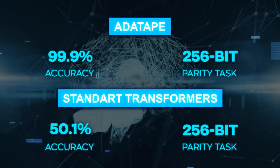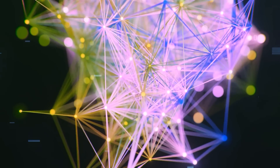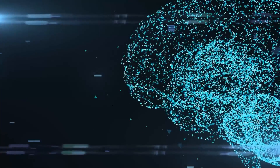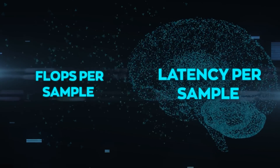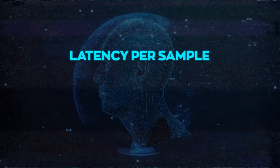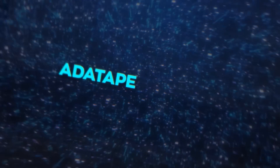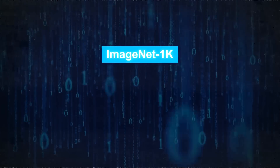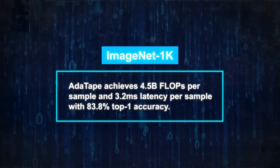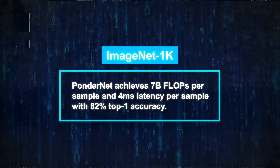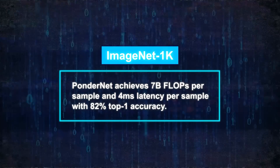AdaTape provides an effective knob to increase accuracy when needed, but is also much more efficient compared to other adaptive baselines because it directly injects adaptivity into the input sequence instead of the model depth. To measure the efficiency of AdaTape, we can use two metrics: FLOPs per sample and latency per sample. FLOPs per sample measures the number of floating point operations required to process one input sample, while latency per sample measures the time required. On ImageNet 1K, AdaTape achieves 4.5B FLOPs per sample and 3.2ms latency per sample with 83.8% top-1 accuracy, compared to PonderNet's 7B FLOPs and 4ms latency with only 82% accuracy.